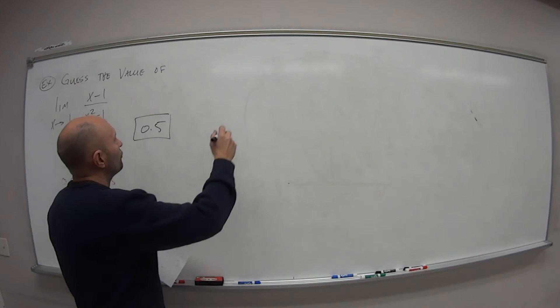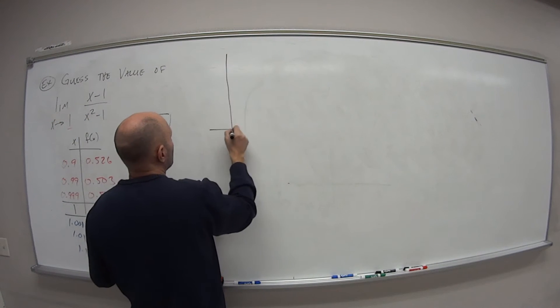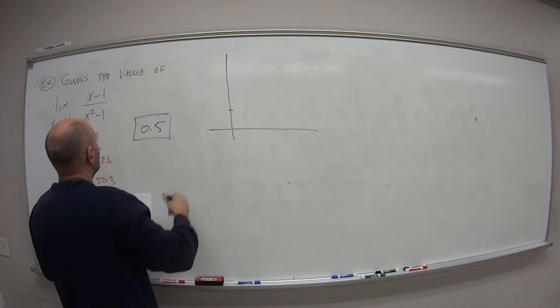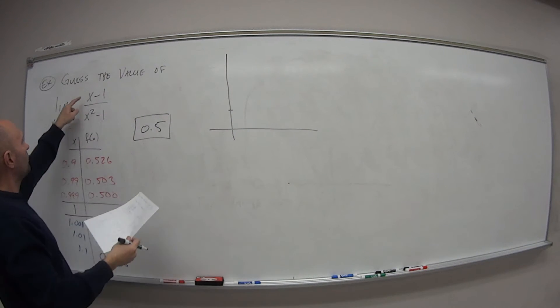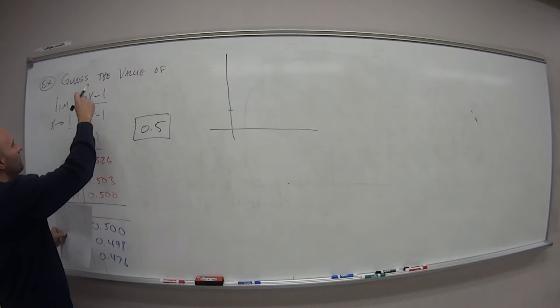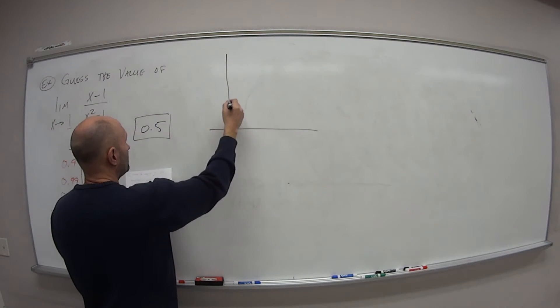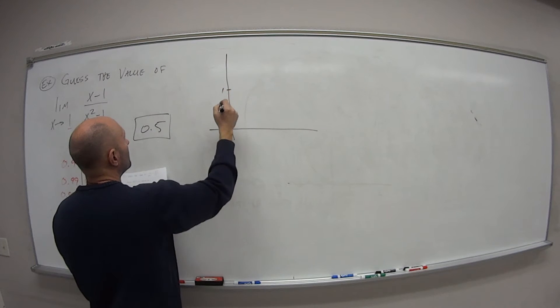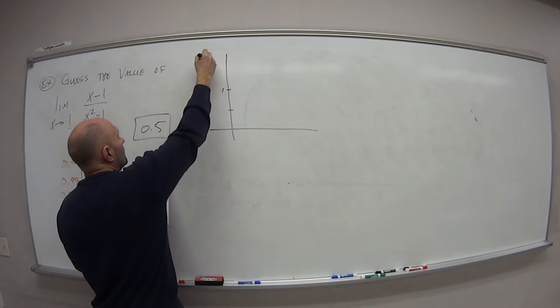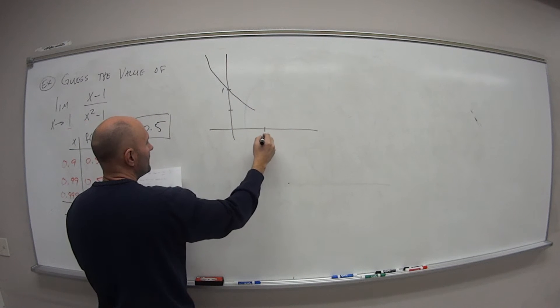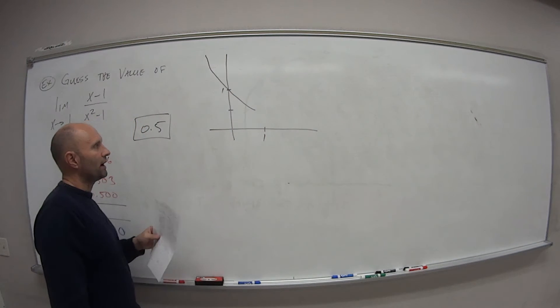If we were to draw a graph of what this looks like, well when x is 0, our value for this is negative 1 over negative 1 which is what? Positive 1. So this graph is going to come down.